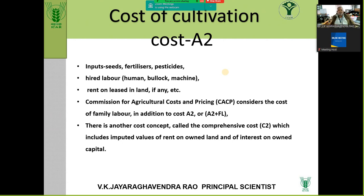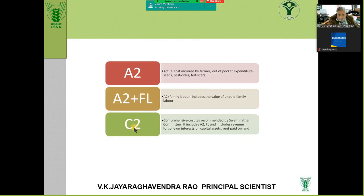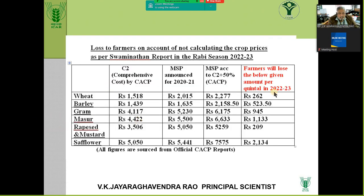Coming to the cost of cultivation — why remuneration is not increasing: the Cost Commission computes the A2 cost, which includes all input seeds, farm labour, and then the comprehensive cost including family labour, imputed cost, and opportunity cost, arriving at the total cost. If the MSP is not offered adequately, for example, an MSP of 2277 rupees for a crop means the farmer makes a very marginal profit of about 260 rupees per quintal in case of barley.